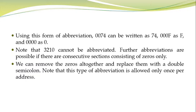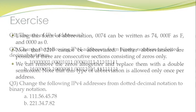Note that 3210 cannot be abbreviated. Further abbreviations are possible if there are consecutive sections consisting of 0s only. We can remove the 0s altogether and replace them with a double colon. Note that this type of abbreviation is allowed only once per address.